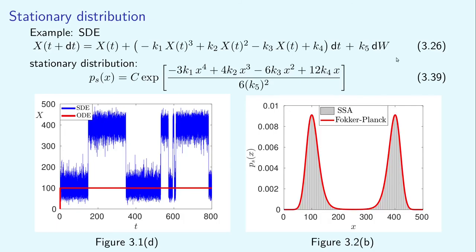Our next example is stochastic differential equation 3.26, which has two favorable states. Its solution was presented in our last lecture in figure 3.1d. Continuing this blue trajectory for a longer time — including at least a few hundred switches between the favorable states — we can estimate the stationary distribution. This grey histogram was estimated using simulation up to time t equal to 10 million. In figure 3.2b, we compare it with the theoretical result obtained by solving the stationary Fokker-Planck equation, plotted as the red line. As you can see, we have observed the system for sufficiently long time so that there is no visible error between the theoretical exact result and the result of my computer code.